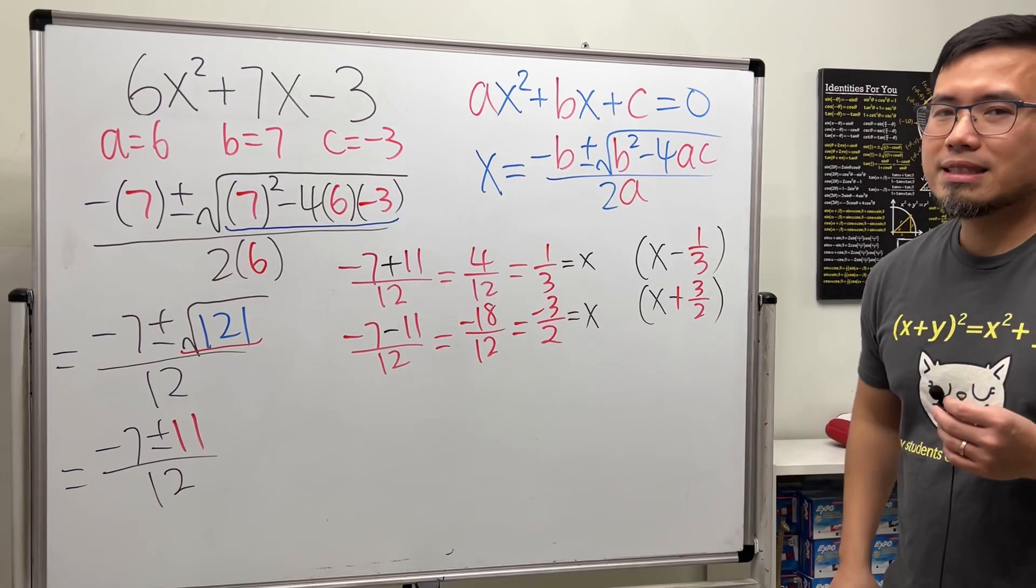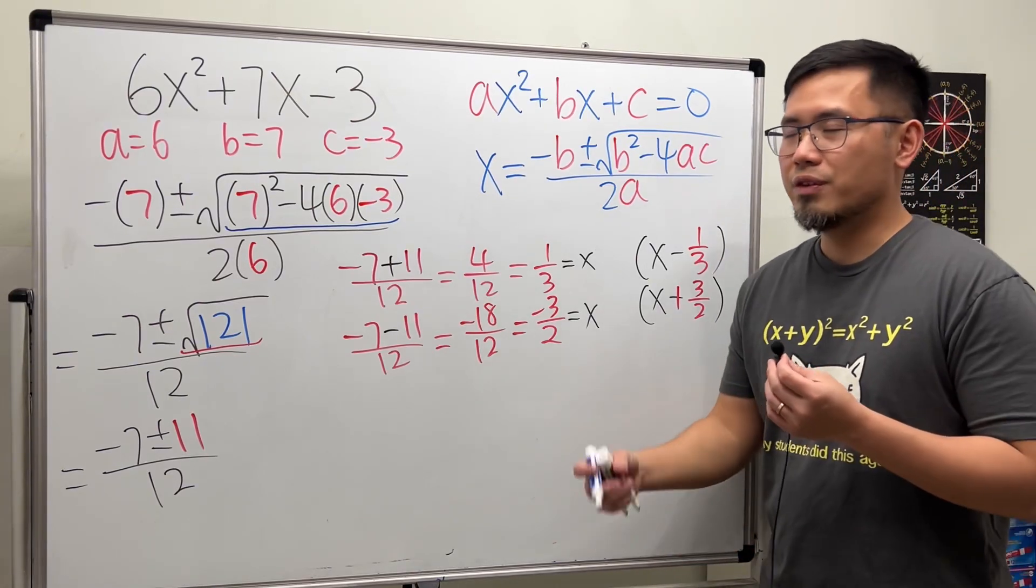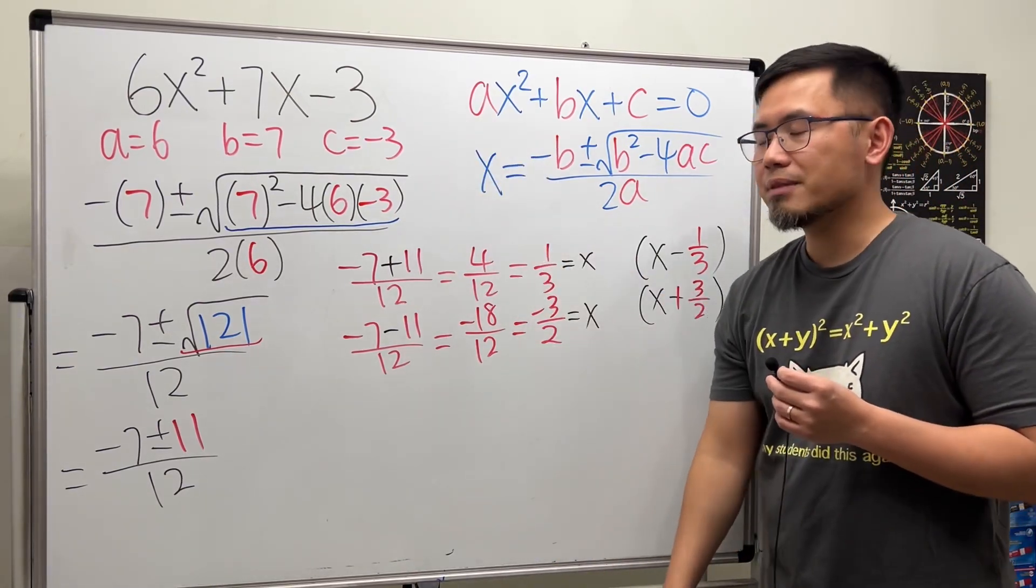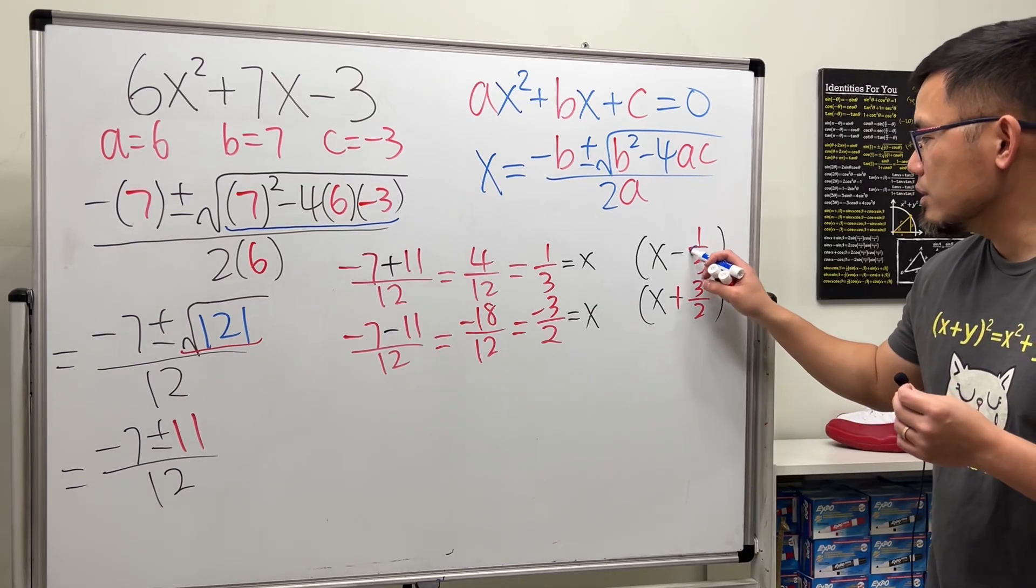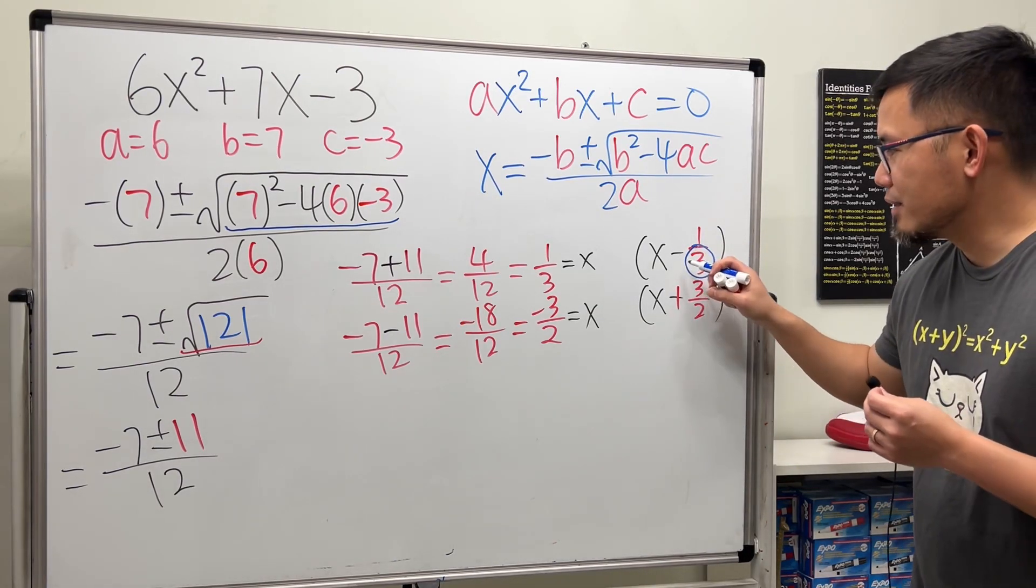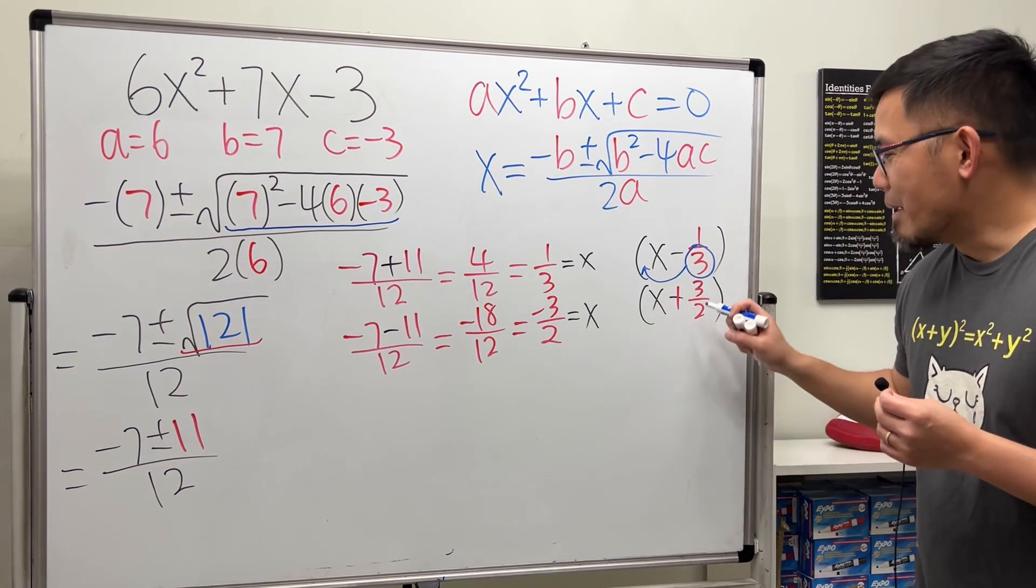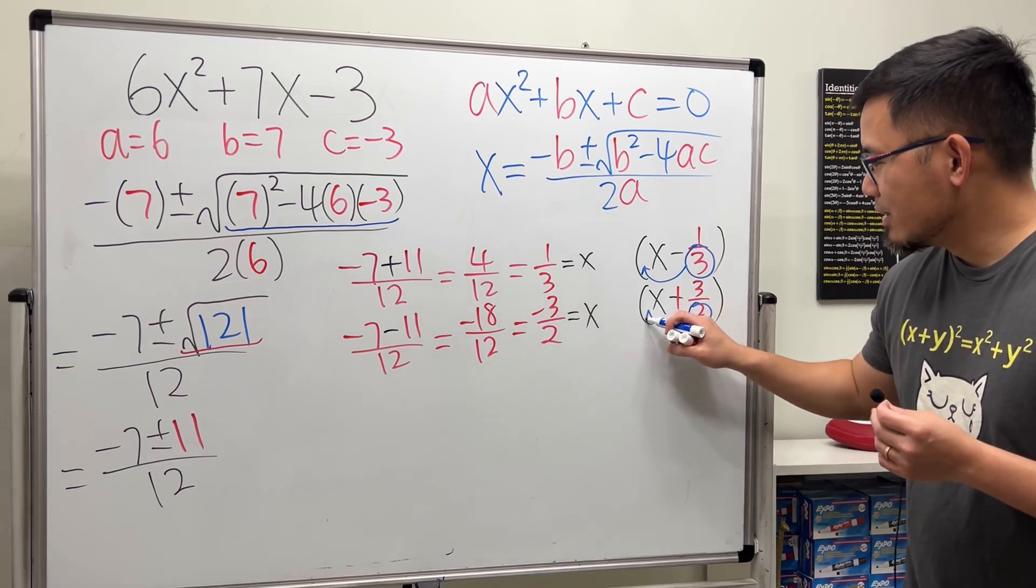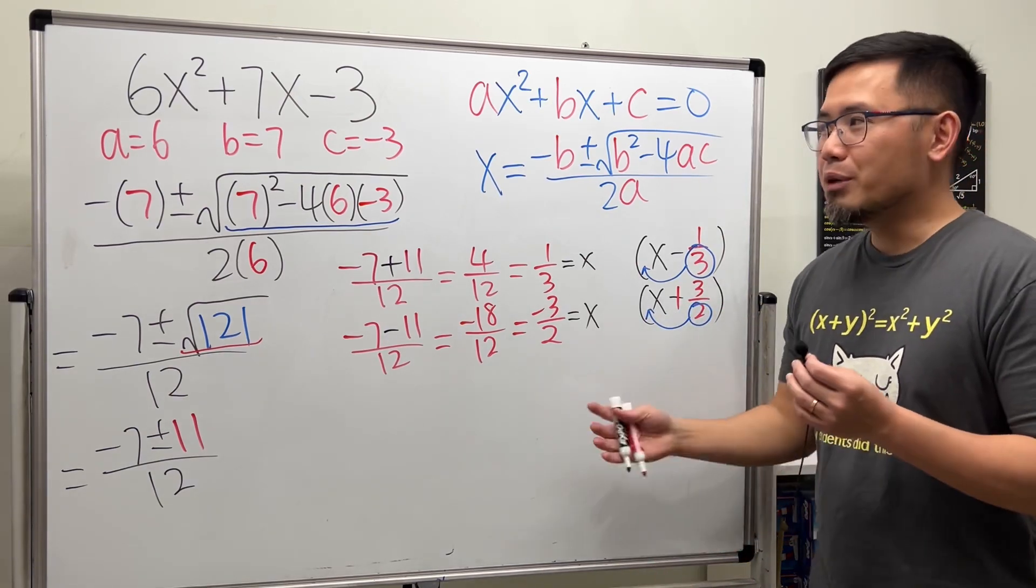This is similar to the slack and divide method I showed you in the previous video when we factored that. When we have a fraction, just go ahead and put this denominator to here. Same thing here. This denominator to here. And there you have it.